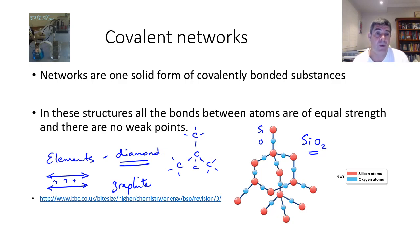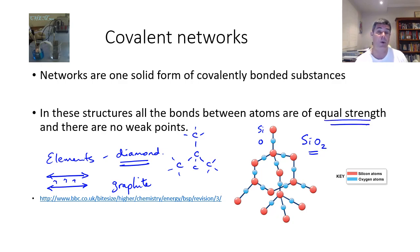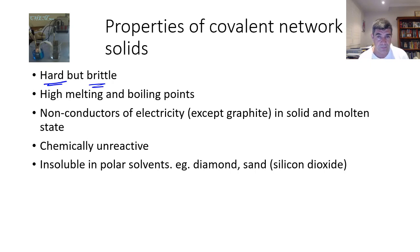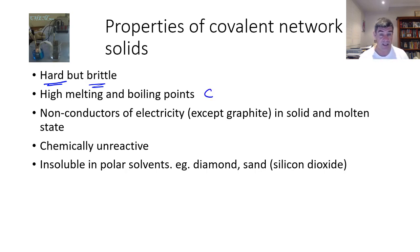The important thing about covalent networks is that all the bonds between the atoms are of equal strength — there are no weak points. This is one of the key aspects of covalent network solids. Like ionic substances, they are very hard, but they are also brittle. They have very high melting and boiling points, and carbon in the form of diamond has the highest melting point of all elements.